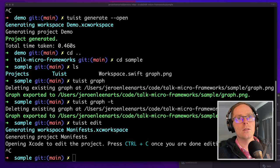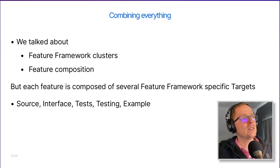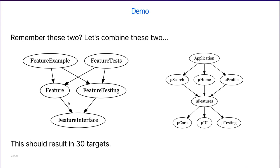Combining everything: we talked about feature framework clusters and feature composition. You have several features that you put together to create your overall structure. But each feature is itself composed of several feature framework-specific targets — the source, interface, test, testing, and example. We're talking about these two pictures: you have your feature cluster on the left and a feature framework definition on the right. Combining these two results in around 30 targets.